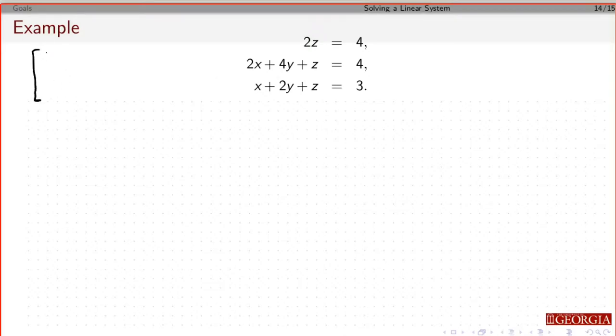So the first equation is 0x plus 0y plus 2z is 4. The second equation is 2x plus 4y plus z is 4. The third equation is 1x plus 2y plus z is 3.